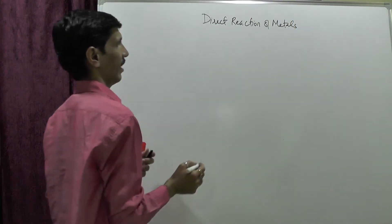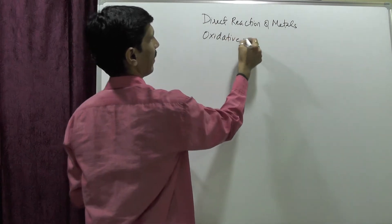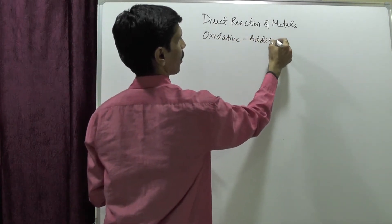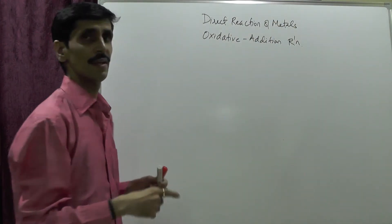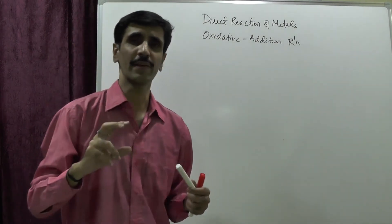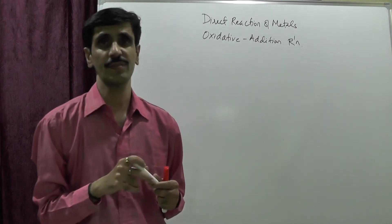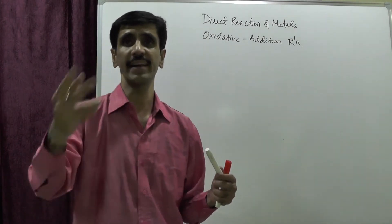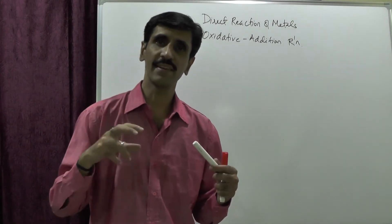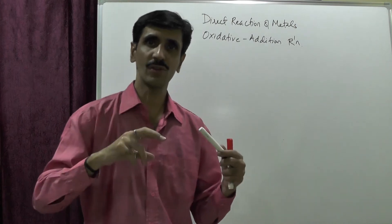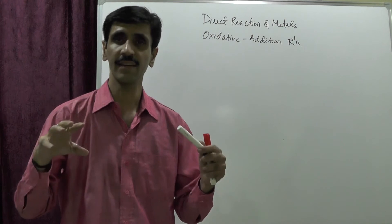The other word for this is oxidative addition reaction. In this reaction, two types of processes take place: one is oxidation and the other is addition. That is why we call it an oxidative addition reaction. What exactly happens is we consider a metal combining with an alkyl halide under suitable conditions, thereby resulting in the formation of an organometallic compound.